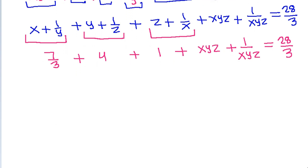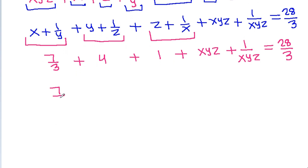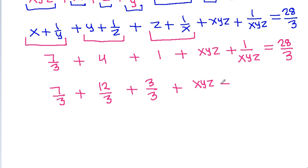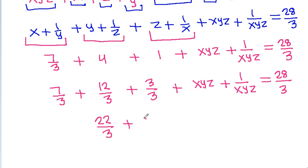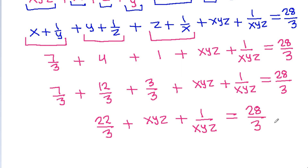Substituting the known values: 7/3 plus 4 (which is 12/3) plus 1 (which is 3/3) plus xyz plus 1/xyz equals 28/3. So 7 plus 12 is 19, plus 3 is 22, giving us 22/3 plus xyz plus 1/xyz equals 28/3.